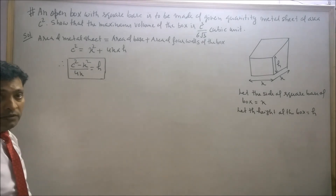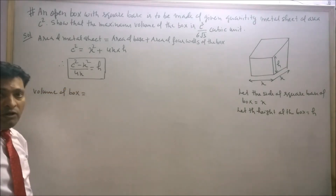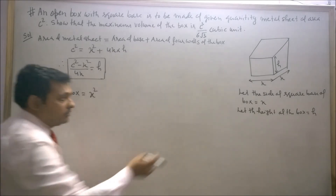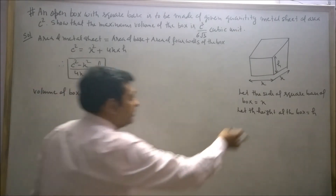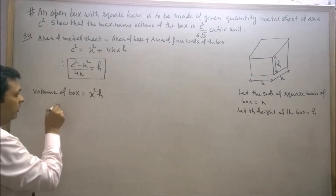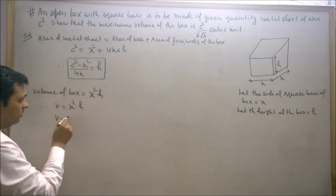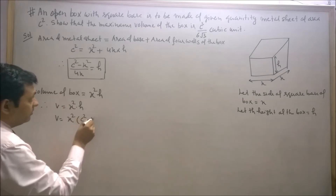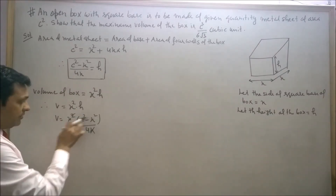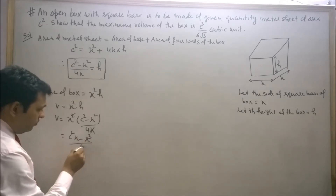Now we will find the volume of the box. Volume of box equals area of base into height. Area of base is x squared, since the base is a square with side x, and height is h. So volume V equals x squared into h. Substituting h, V equals x squared into (C squared minus x squared) upon 4x. One power of x cancels, giving V equals (C squared x minus x cubed) upon 4.